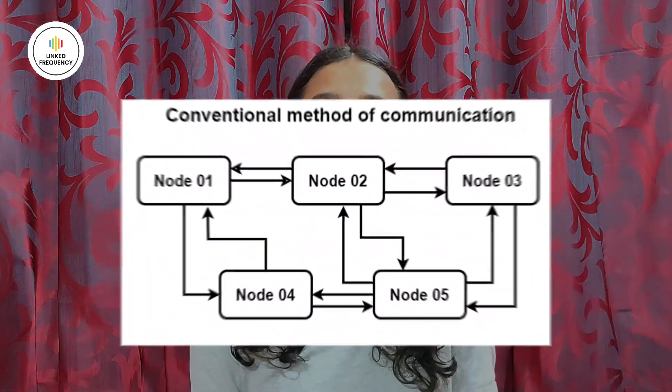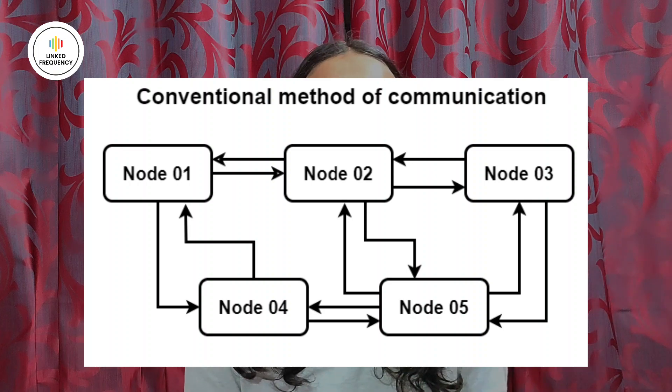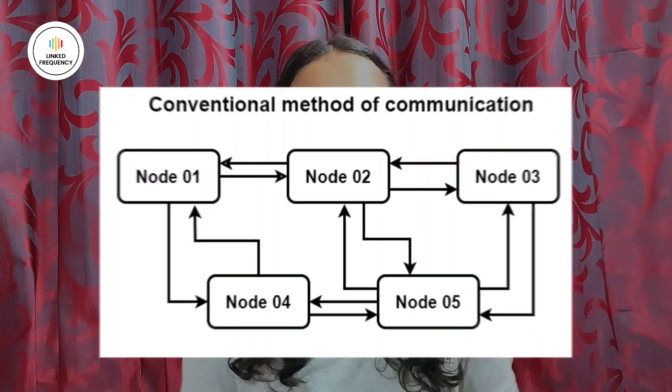The conventional method of communication is represented on the screen, where you can see the connectivity between the ECUs is done individually. However, CAN protocol provided a solution by allowing multiple ECUs to communicate with each other over a shared bus, hence reducing the amount of wiring requirements. CAN protocol was basically designed to replace the conventional wiring method used in automobiles for communication between different ECUs.